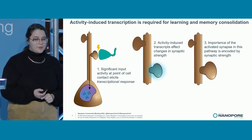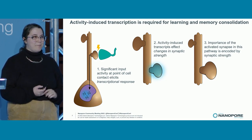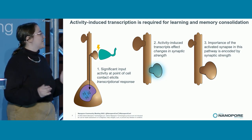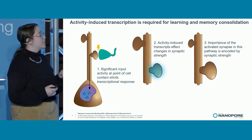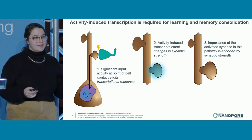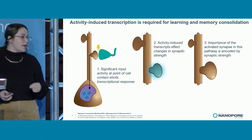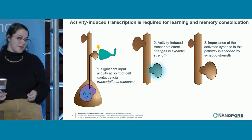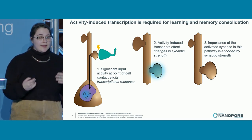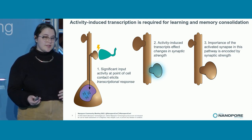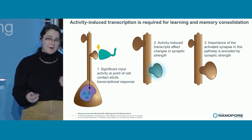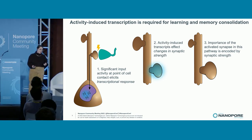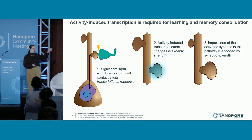It is computationally bonkers to me that neurons are able to weigh the relative significance of potentially thousands of inputs and then make millisecond decisions on whether to fire or not fire. Their ability to do this is how we learn, it's how we consolidate memory, and that's predicated on this activity-induced transcriptional response, so it's really important.